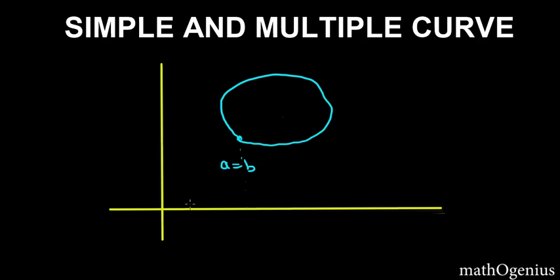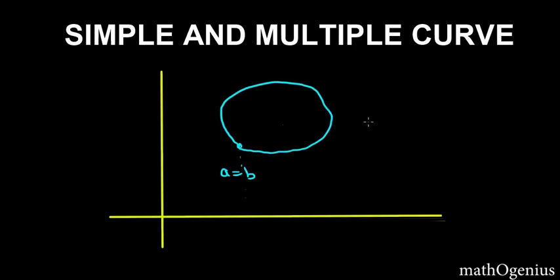Before understanding what is a multiple closed curve, let's see what is the definition of simple closed curve. A simple curve is a curve which does not cross itself. For example, it did not cross itself while coming back to the same point. Now a multiple curve is a curve which will cross itself.